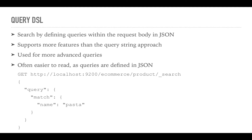The only difference is that with this query, I explicitly defined which field I'm searching, but I could also specify the underscore all field if I wanted to. In this case, I'm searching for products that contain the term pasta in their names. As you can see, the Q parameter has been replaced with JSON in the request body.